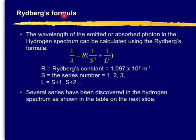Rydberg's formula. The wavelength of the emitted or absorbed photon in the hydrogen spectrum can be calculated using the Rydberg's formula, which is that one there. It's fairly complicated. One over lambda wavelength. R is equal to R is called the Rydberg's constant. It's got this constant value.